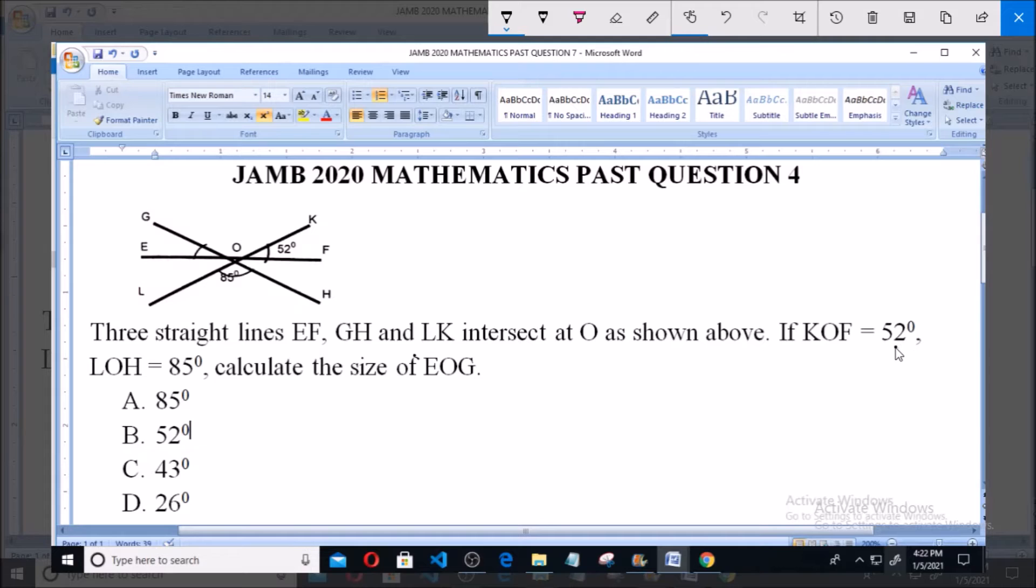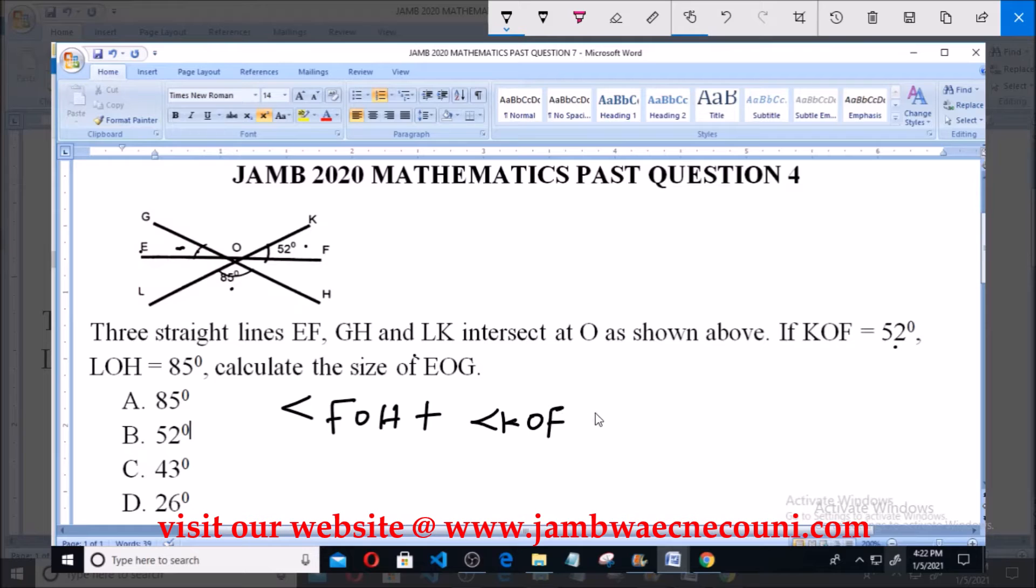KOF is 52 degrees as shown and LOH is 85 degrees as shown, now we're asked to calculate the size of EOG, that is EOG, this angle here. Now angle FOH plus angle KOF plus angle LOH is equals to...